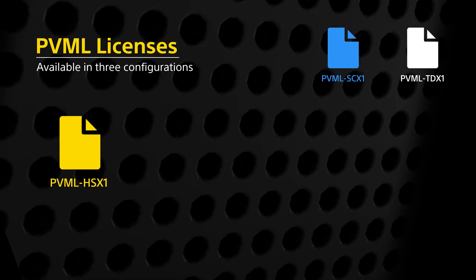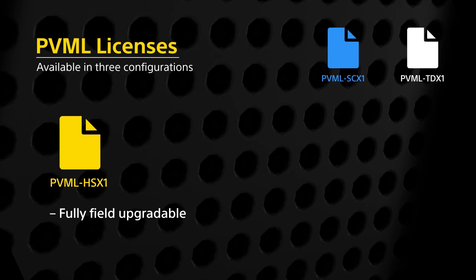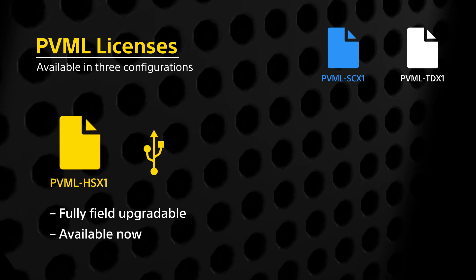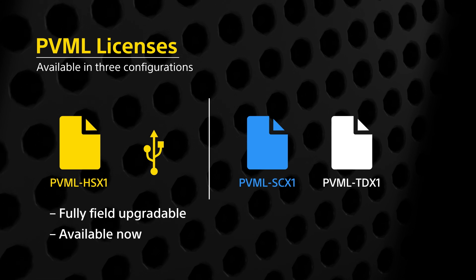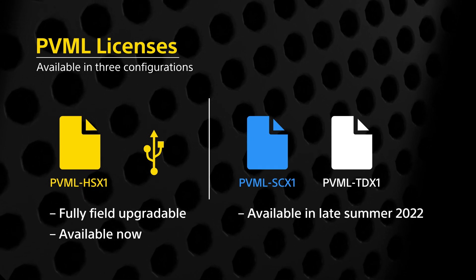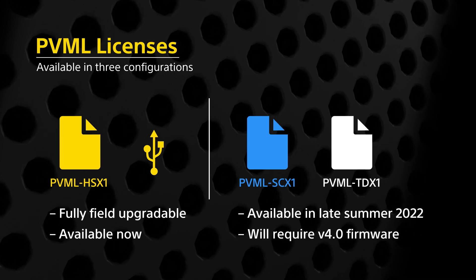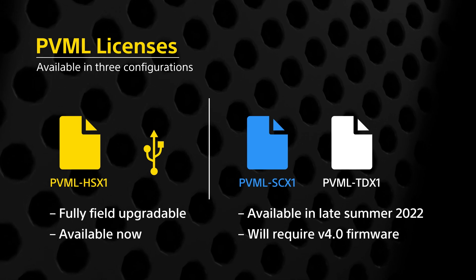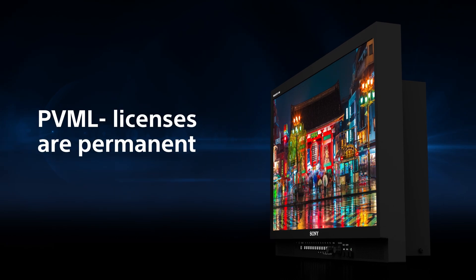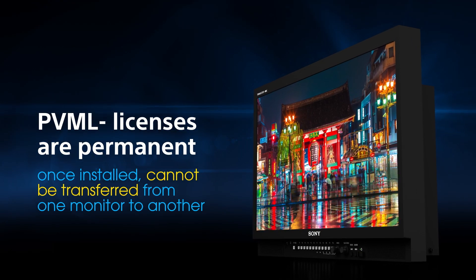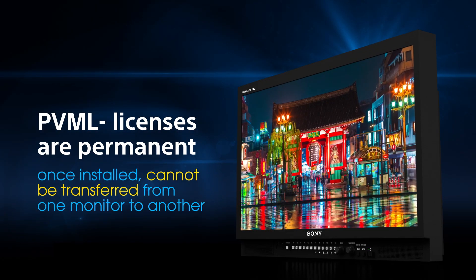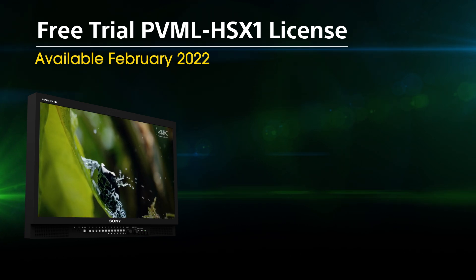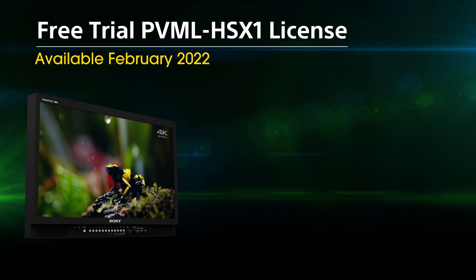The PVML HS-X1 license is fully field upgradeable and is activated via the USB port on the front of the monitor, and it's available now. The PVML TD-X1 and PVML SC-X1 licenses are scheduled to be available in late summer 2022 and will require version 4.0 firmware. Note that audio and timecode output will also be included with the version 4 firmware update. The PVML licenses are all permanent and once installed cannot be transferred from one monitor to another.